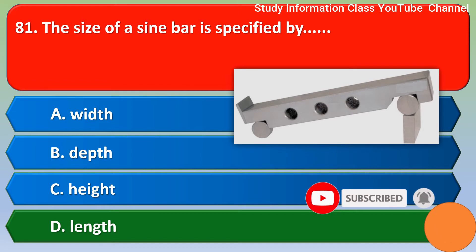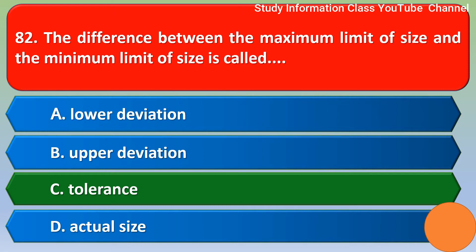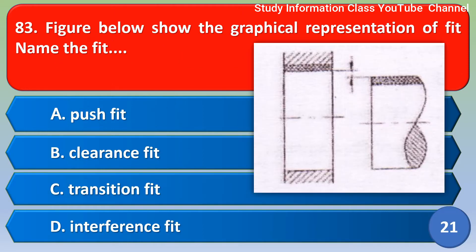Next question: The difference between the maximum limit of size and the minimum limit of size is called — option A: lower deviation, option B: upper deviation, option C: tolerance, option D: actual size. The correct answer is option C, tolerance.